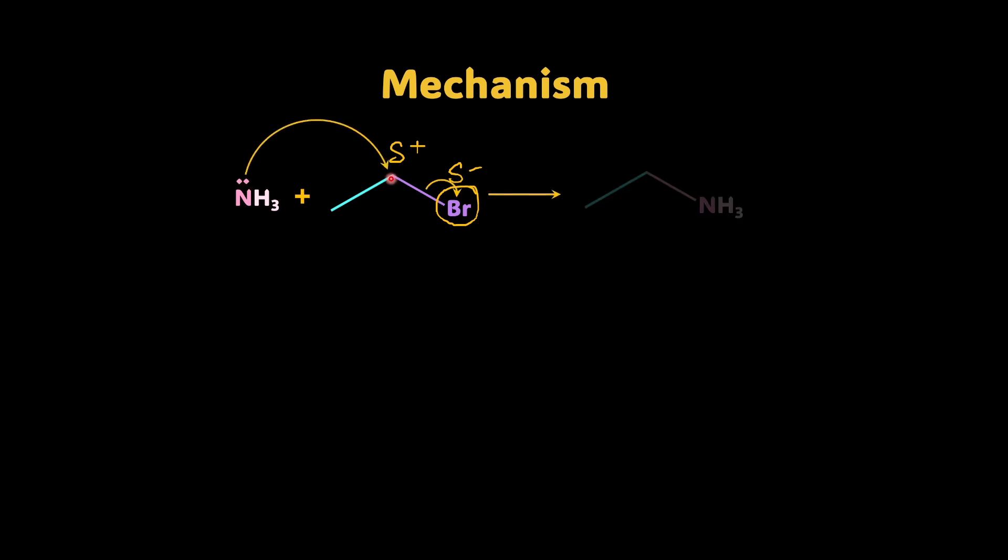So lone pair attacks this carbon and as a result, what do you get? You get a salt, a salt which looks like this, check, okay? So what you are getting out here is aminium bromide salt. So what I am doing is just dropping the E of amine. So aminium salt. You get it?